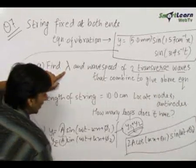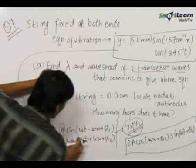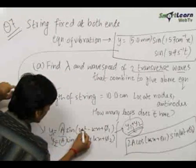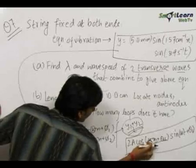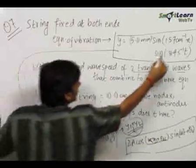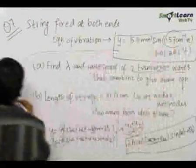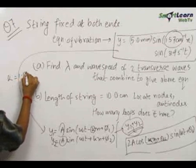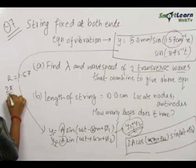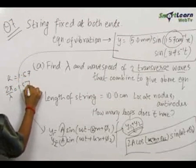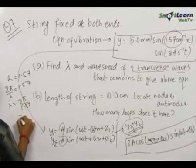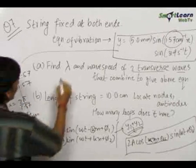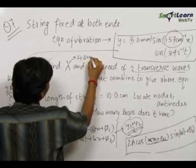Now, the wavelength λ of the component waves is found out using k which comes in front of x. Here the k value is equal to 1.57, so we can write 2π/λ equals 1.57, therefore λ equals 2π/1.57 which equals 4 centimeters.